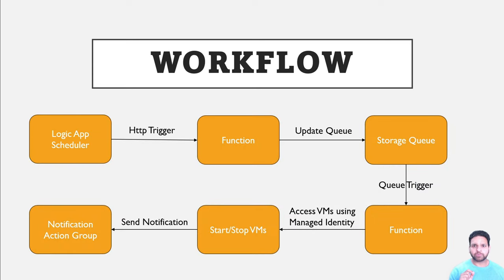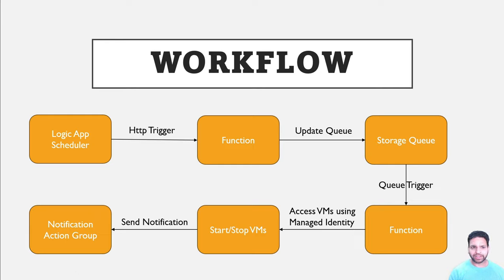Now let's talk about the workflow and the different services used. When you deploy this solution, 5 different logic apps are created: two for scheduler stop and start, two for sequence stop and start, and one for autostop. In the logic app you define the scheduler, which is the timer, as well as the configuration — which virtual machines need to be stopped or started. Once that is done, the logic app sends a request to the function app.